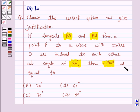A: 50 degrees, B: 60 degrees, C: 70 degrees, and D: 80 degrees.